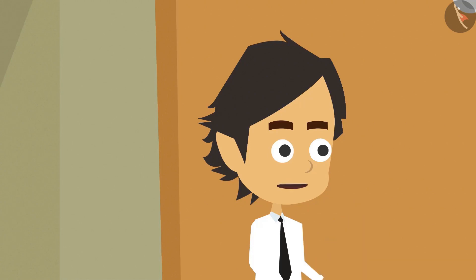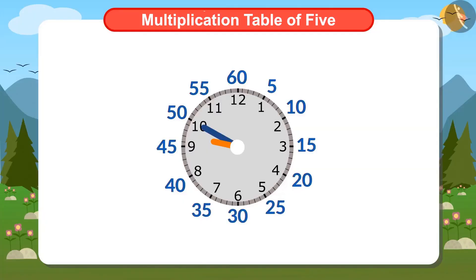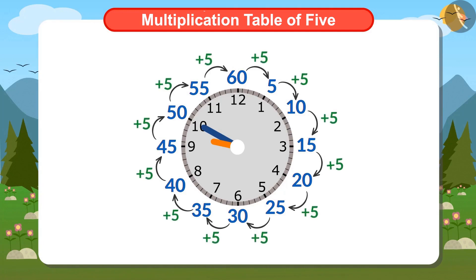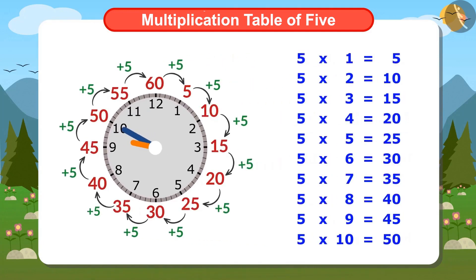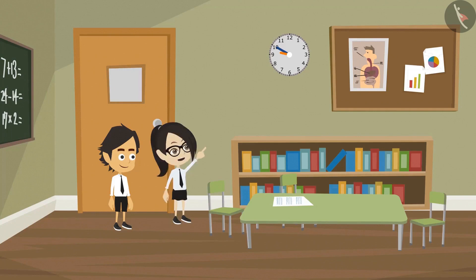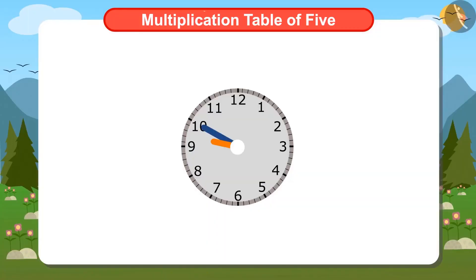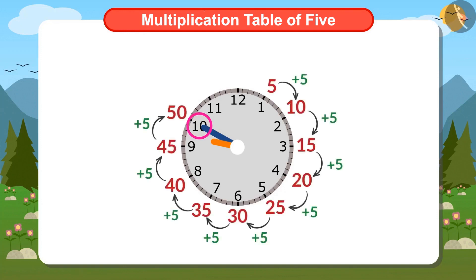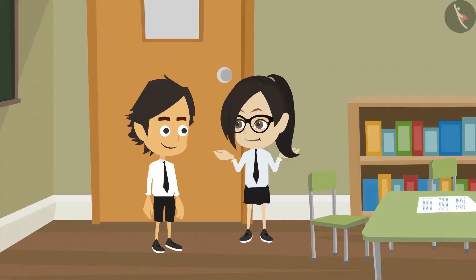I use the multiplication table of 5. There is a direct relation. See, the difference between all these numbers is 5, and the difference between the numbers in the multiplication table of 5 is also 5. So why don't you tell how many minutes it is showing on the clock? Look, the minute hand is on the 10 right now, which means it is 50 minutes.